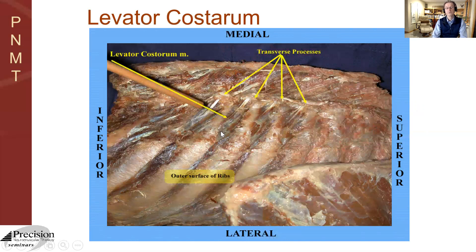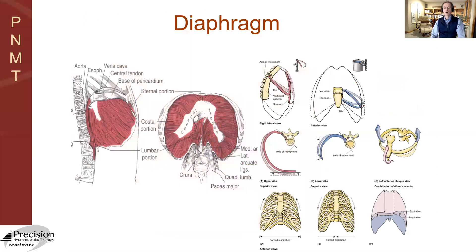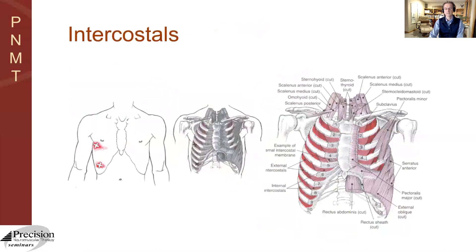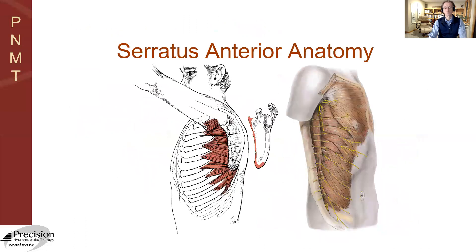Also familiarize yourself with the diaphragm, not only its attachments but how it functions in the respiratory cycle. What happens to the diaphragm when you inhale? What happens to the diaphragm when you exhale? We'll spend some time with this and show you why that's really important in terms of the thoracic spine. The intercostal muscles between the ribs are also important for respiration, and in a tertiary way, rotation movements.